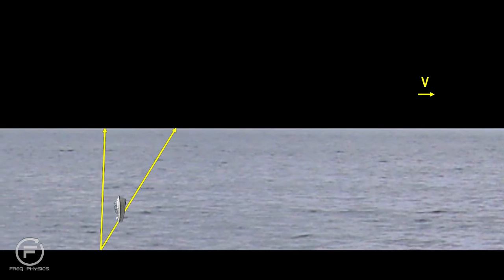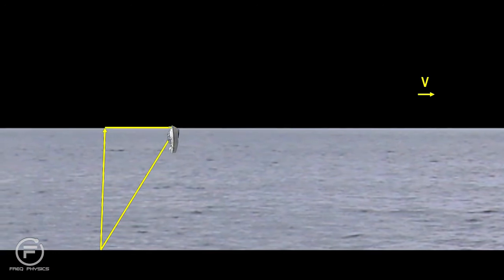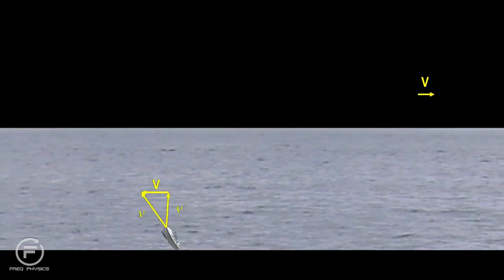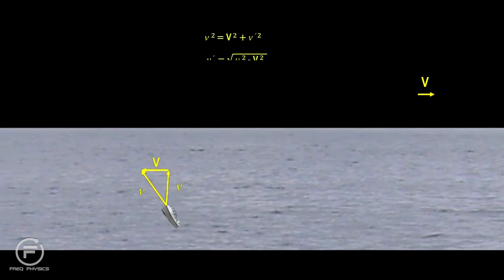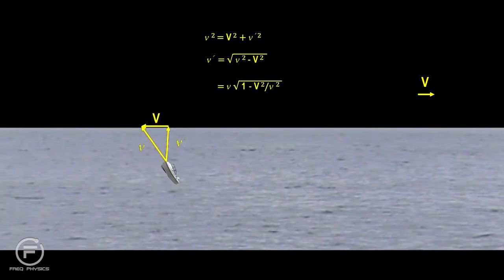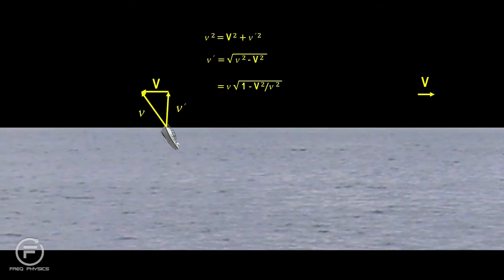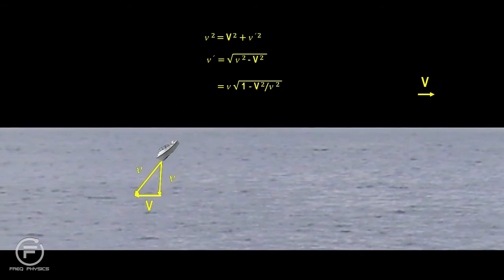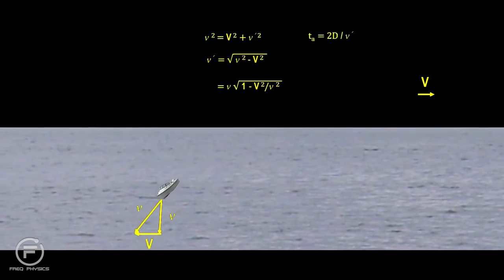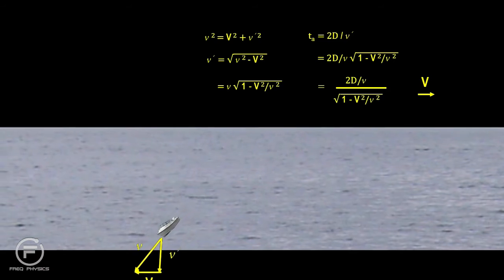Let's take a look at the boat going across the river. If the boat headed directly to the destination point, the current would take it downstream and it would miss its target. To compensate, the upstream component of its velocity would have to match the flow velocity of the river. This would give us a right triangle, where V prime would be the net speed across the river. We can calculate V prime by using the Pythagorean Theorem. The same analysis works for the trip back, so the time for the round trip can be calculated as twice the time for one way. That's two times the distance divided by V prime. Substituting the value for V prime, we get the final equation.